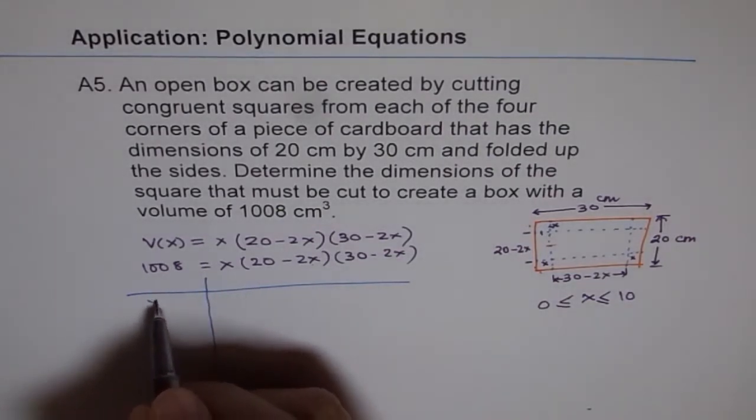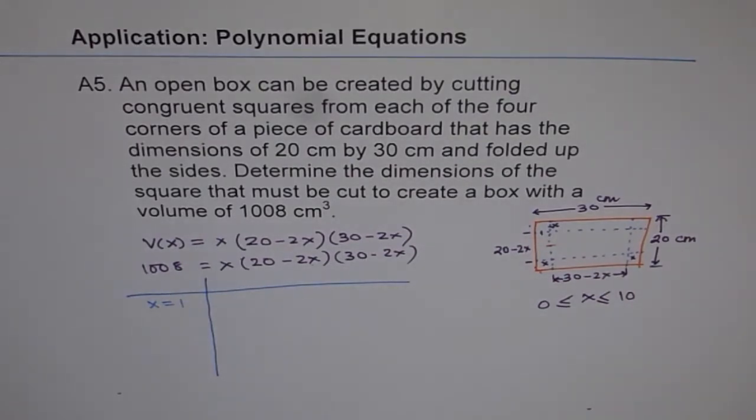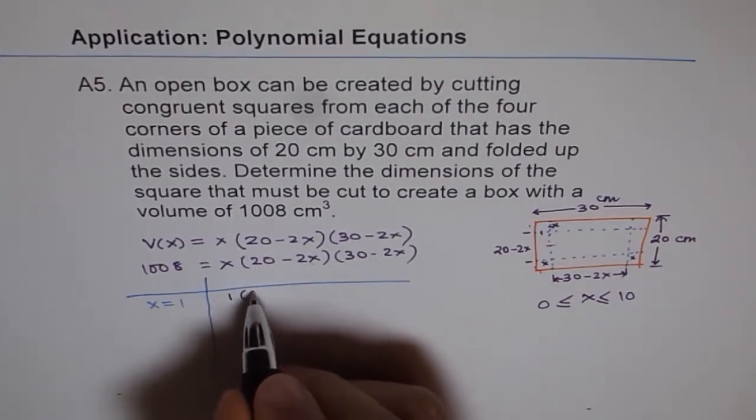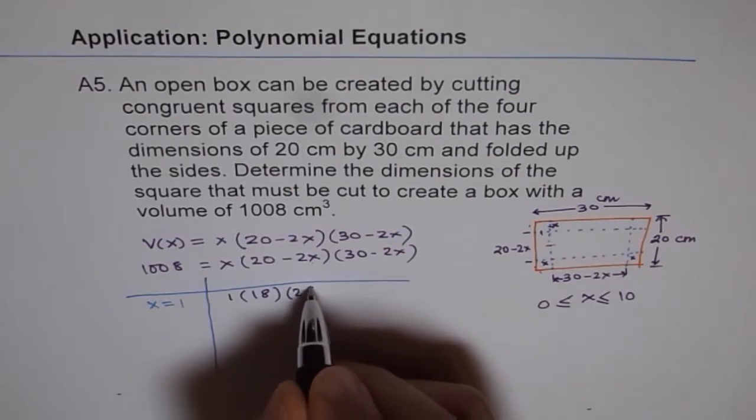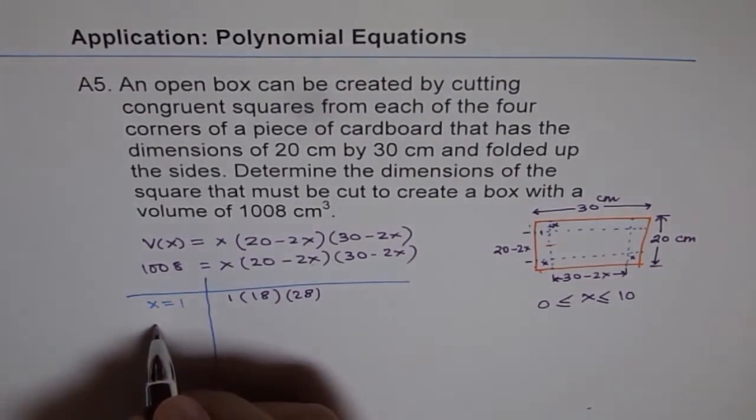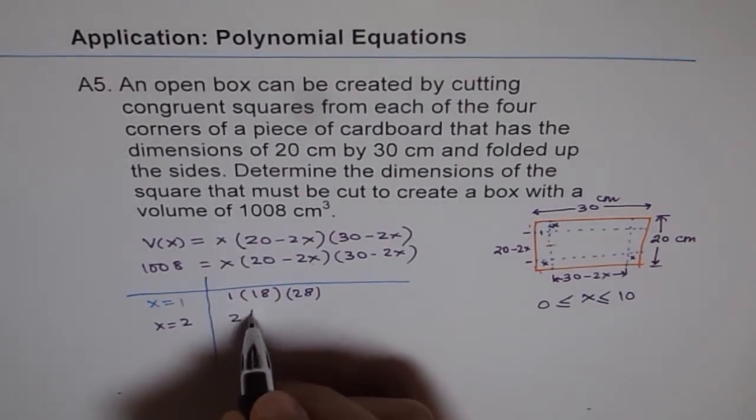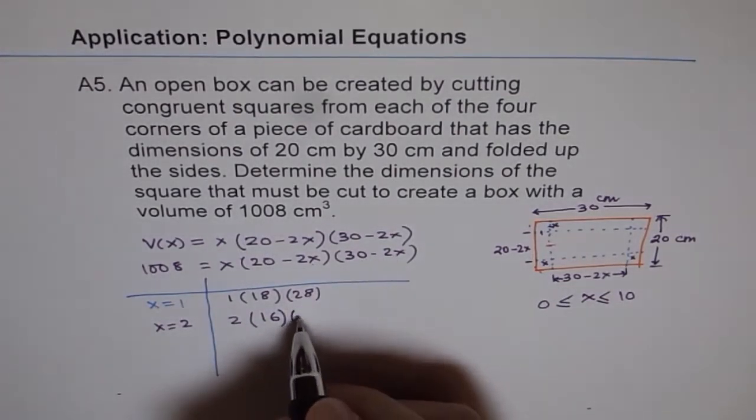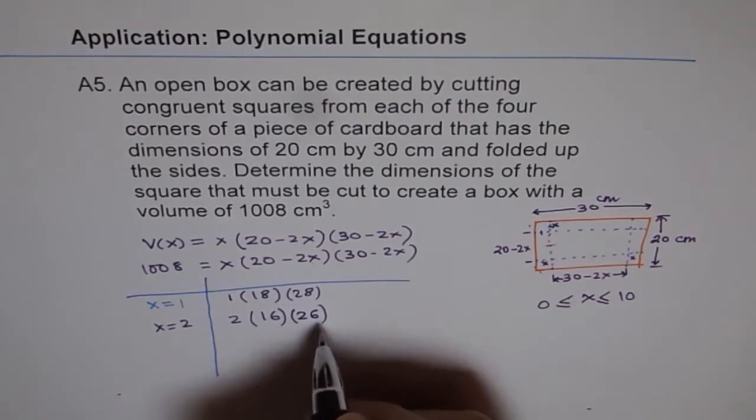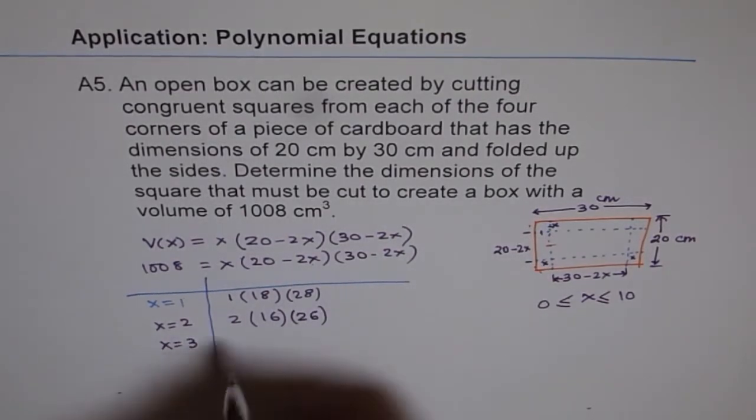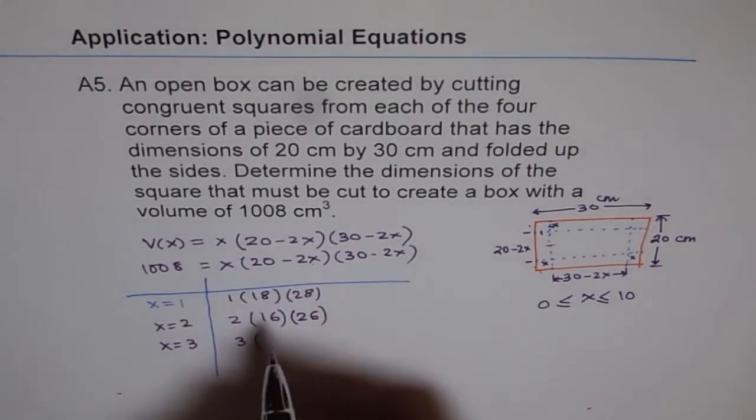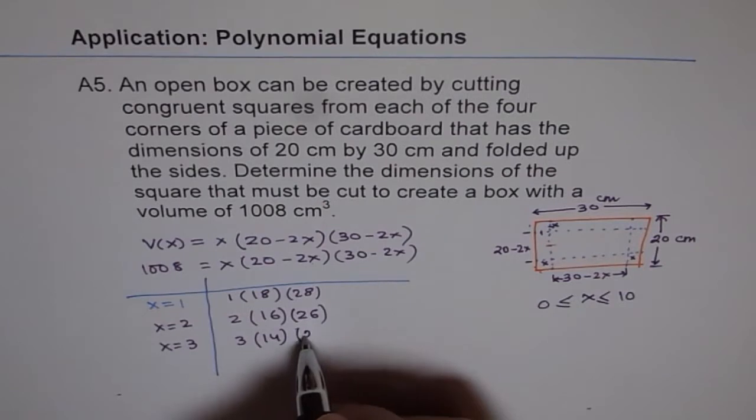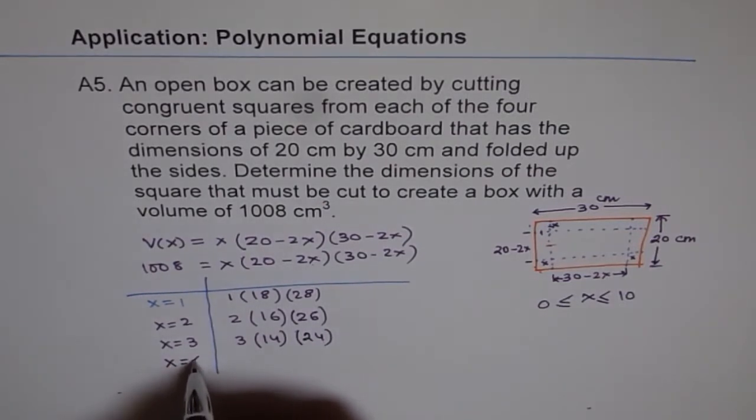So let us say if x equals to 1, then what value do I get? So if x is 1, then I will get 1 times, so 20 minus 2 is 18 and 30 minus 2 is 28, and calculate this value. Then I will say let x be equal to 2, and then I will write 2 here, and 20 minus 4 which is 16 and 30 minus 4 which is 26. Calculate that value. Then I will say x equals to 3. Now plug in 3 here. 20 minus 2 times 3 is 6, so 20 minus 6 is 14, and 30 minus 6 which is 24. Then I will put x equals to 4 and I can continue.